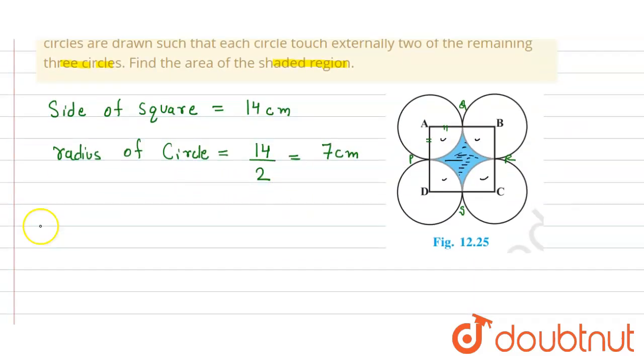So here now we find the area of shaded region. So area of shaded region will be equal to the area of square minus 4 into, because there are 4 quadrants and they all are equal.